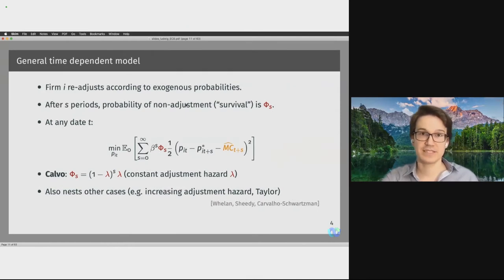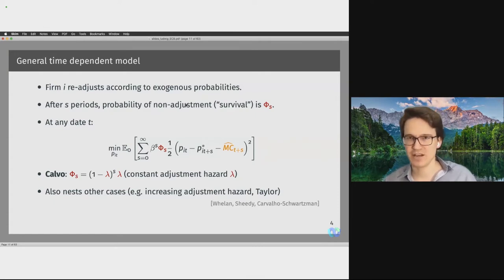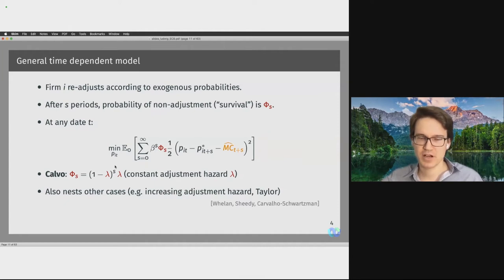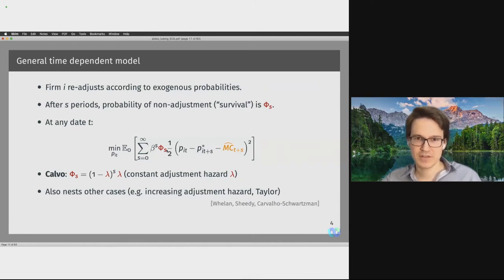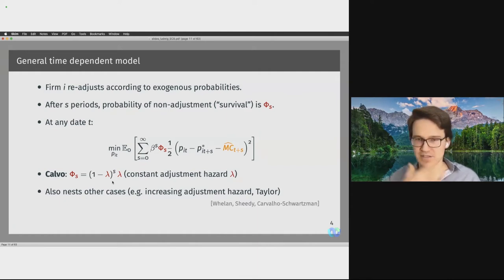The second class of models are general time-dependent models, where adjustment is not subject to a cost and is given by exogenous adjustment probabilities. After s periods, we denote the probability of not having adjusted yet — the survival probability — by phi_s. When a firm gets to adjust, it solves a simple cost minimization where the only term remaining is the deviation from the firm's optimal price, discounted by survival probabilities phi_s. Calvo has a very distinct pattern of survival probabilities that are exponentially declining at the rate of the constant Calvo adjustment hazard. This also nests other time-dependent models, such as models with increasing adjustment hazards.